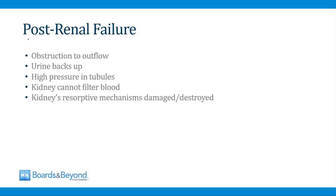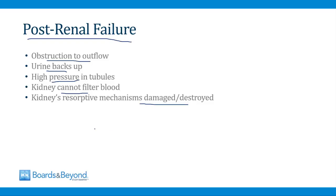Now let's talk about post-renal failure. In post-renal failure, there's no problem with the kidneys themselves — the problem is an obstruction to the outflow of urine through the urinary tract. As a result, urine backs up and there are high pressures in the tubules of the nephron, causing the kidneys to be unable to filter the blood. In addition, the resorptive mechanisms of the kidneys don't work either. This all works together to cause the BUN and creatinine to rise and for renal failure to develop.